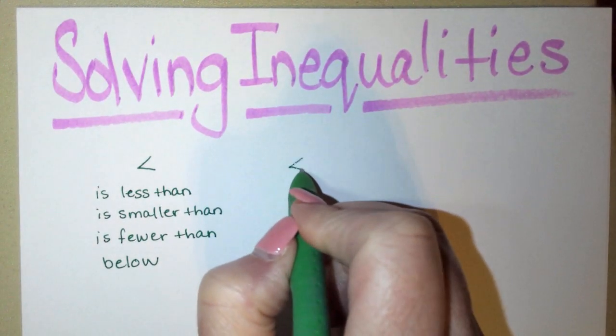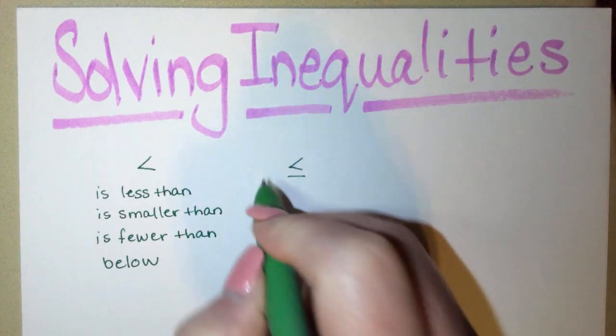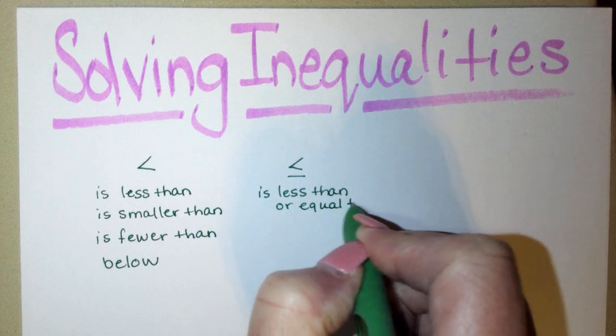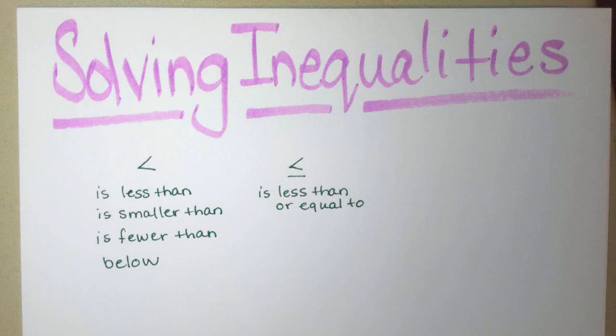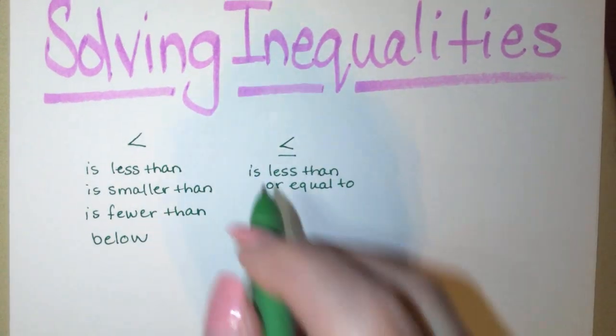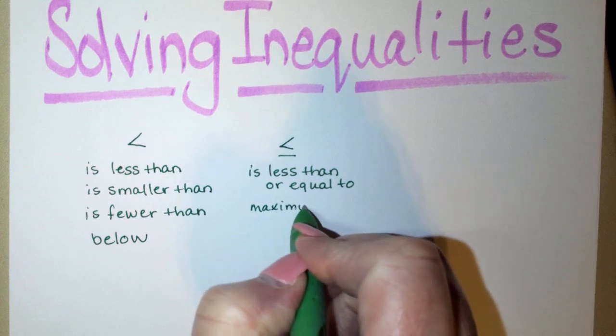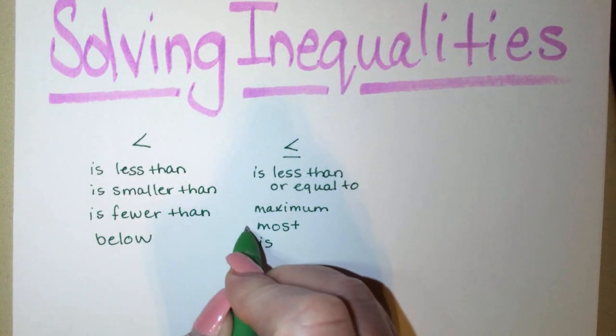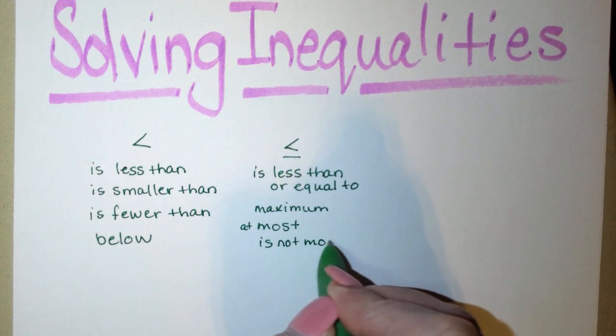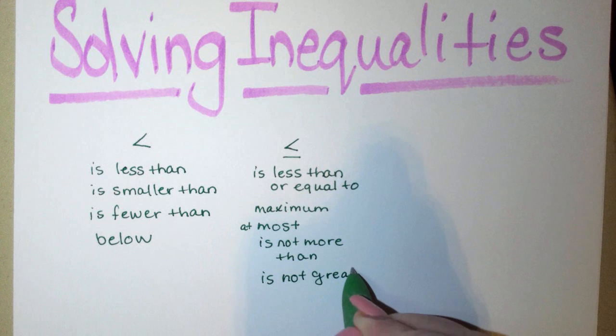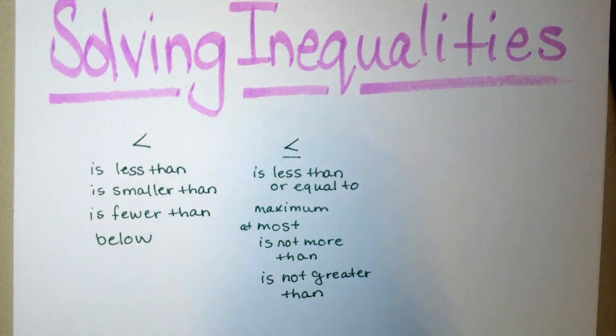Now, we can have the is less than symbol with a line underneath it. That line underneath it tells us it could be less than or equal to. When we start getting into less than or equal to, we're looking for something that can be at maximum or at most. When you see the word maximum, that means no more than that amount can fit in there, or at most, is not more than, is not greater than. All of those are things that could be less than or equal to.